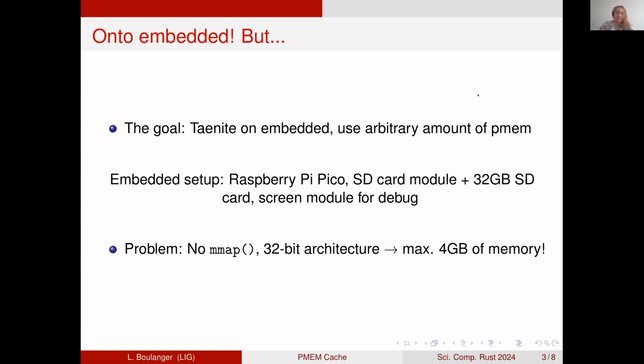Also, the CPU is 32-bit, so at maximum - I think I got the number right - it's maximum four gigabytes of memory in your address space, which is way less than the 32 gigabytes that you would want to have here.